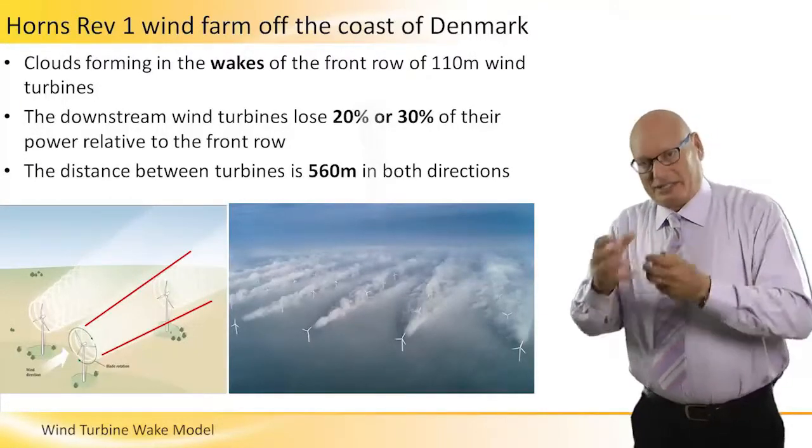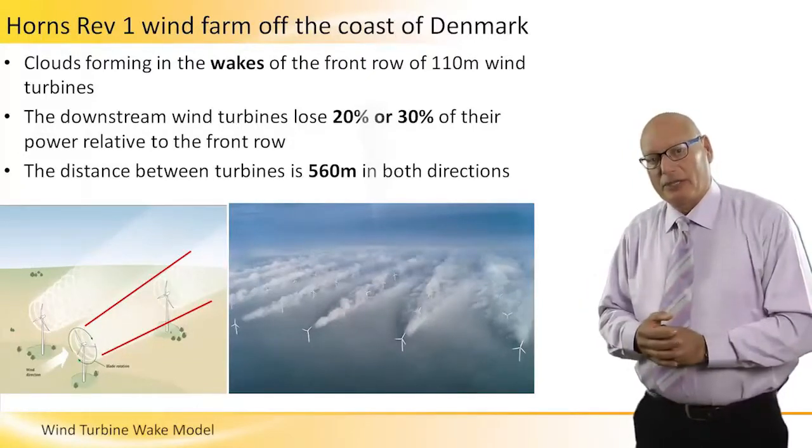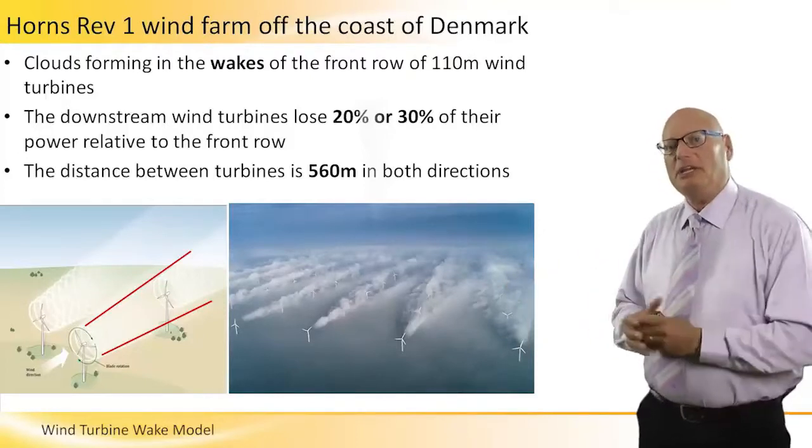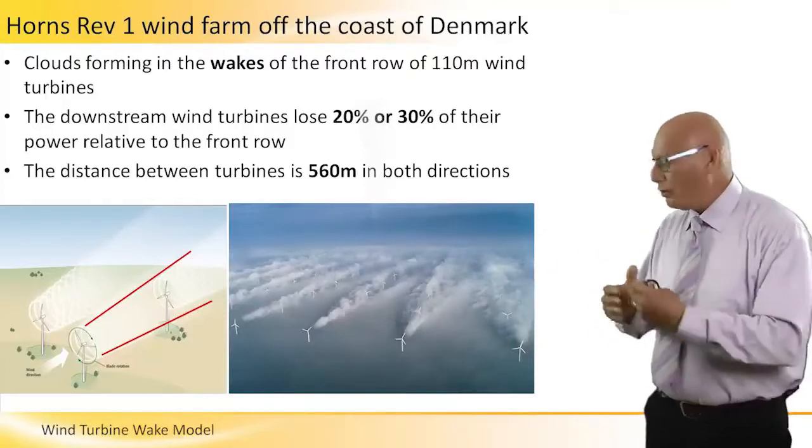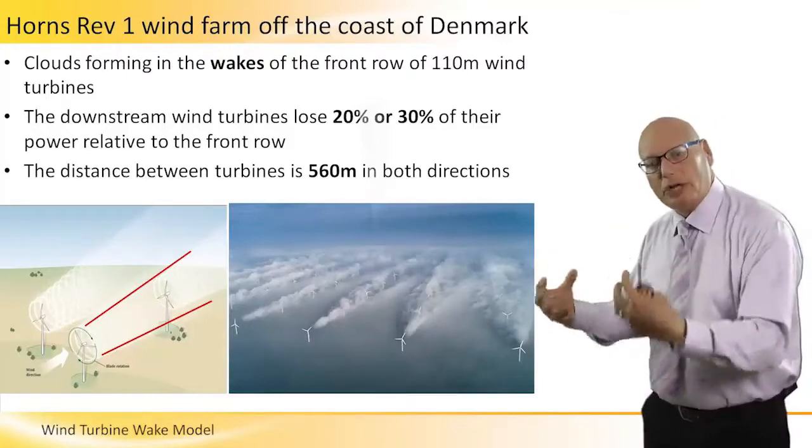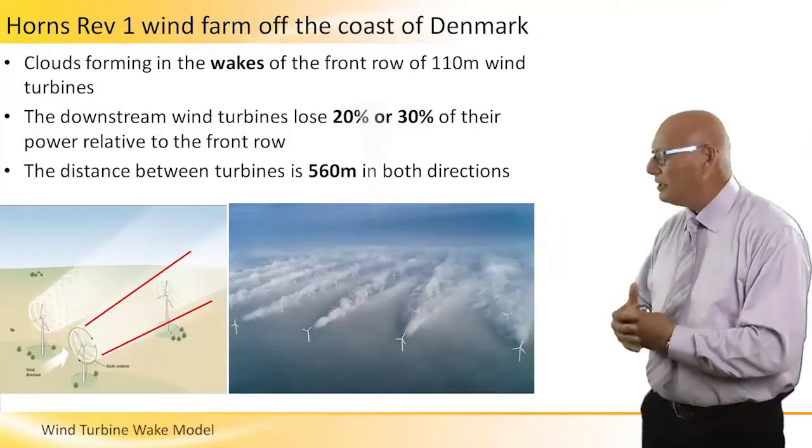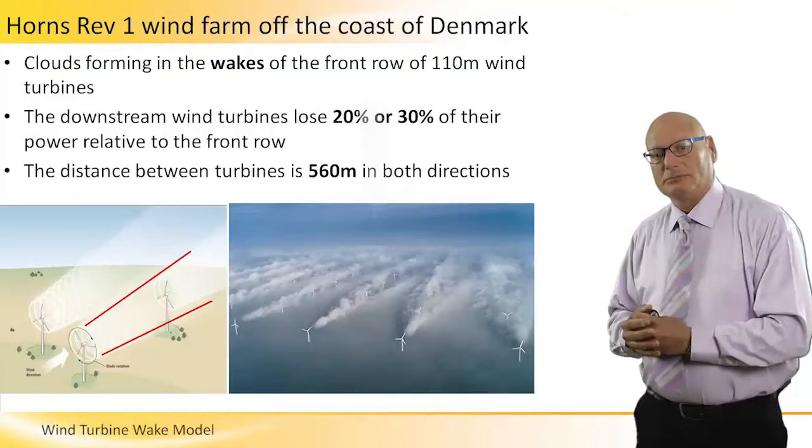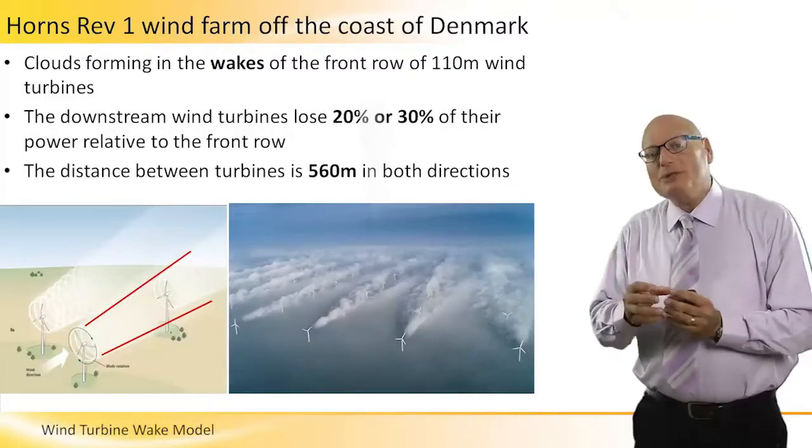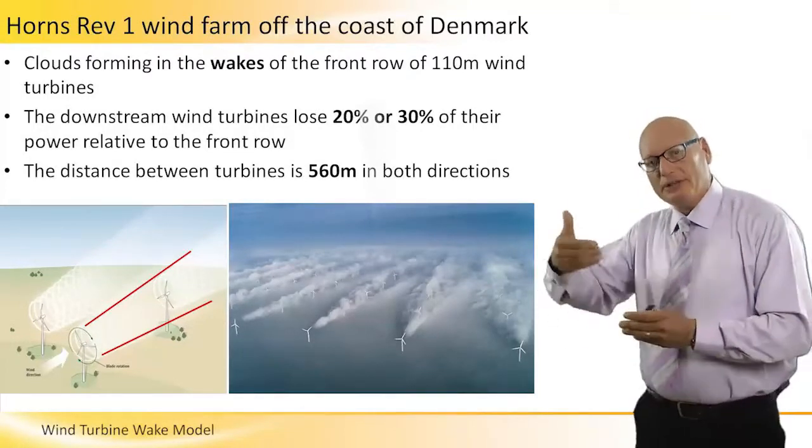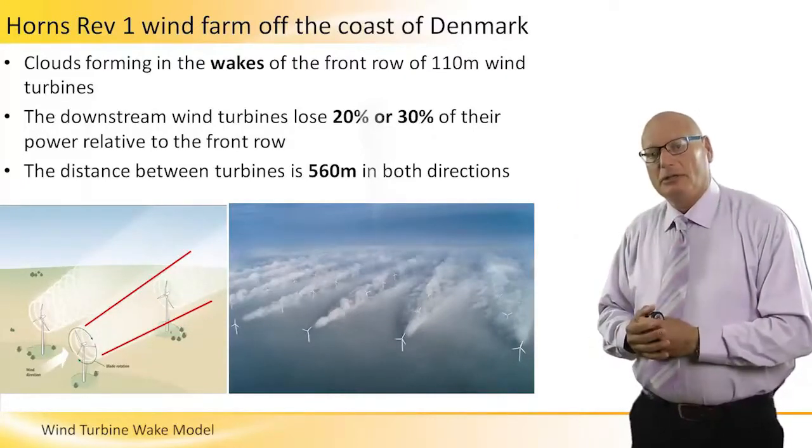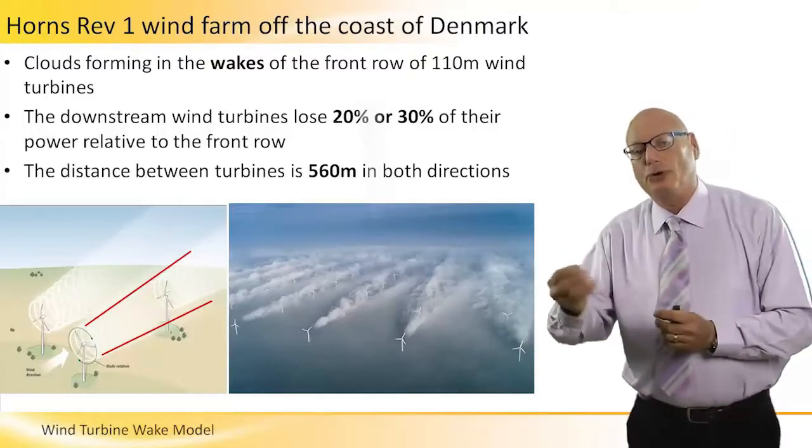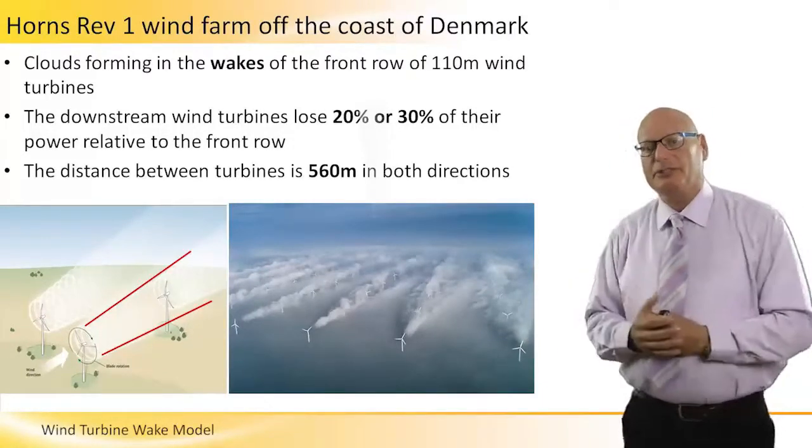There are wakes, there are turbulences. We can see the picture on the right, high speed getting into the turbine. Because the speed is lower and there are air turbulences, very clearly you can see the clouds forming wakes. So the downstream wind turbines lose about 20 to 30 percent of their power relative to the front, so right there we lose about 20 and 30 percent.